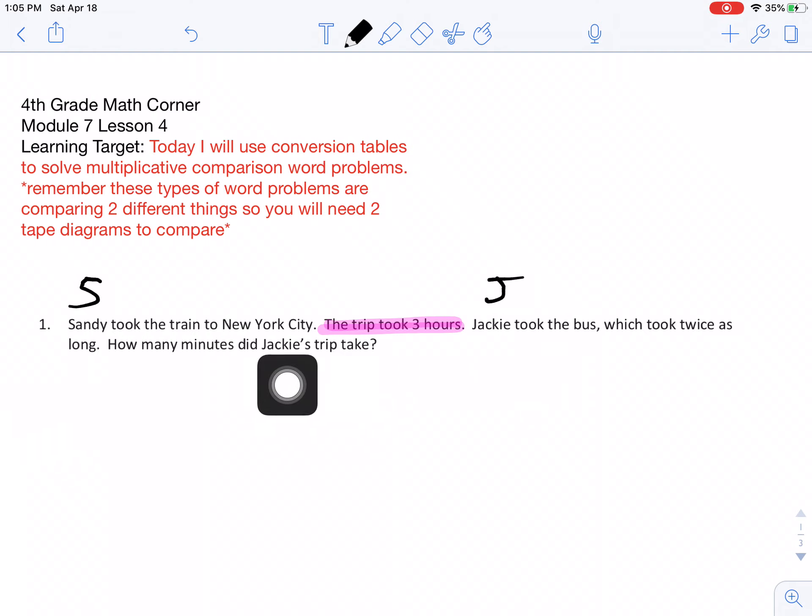Jackie took the bus, and I know that a train is much faster than a bus, so the bus is going to take longer. It says that it took twice as long, twice as long to take the bus. I need to know, my question is asking, how many minutes did Jackie's trip take? So I'm trying to find out Jackie's trip. We already know Sandy's trip.